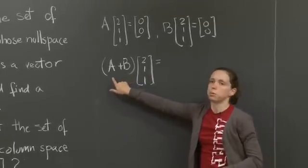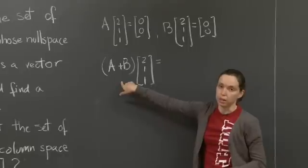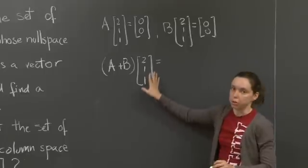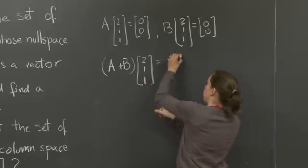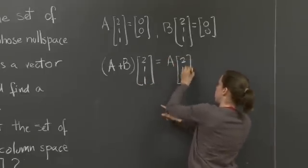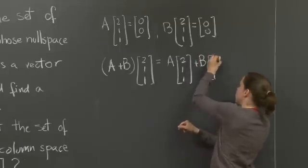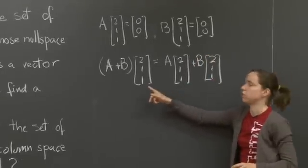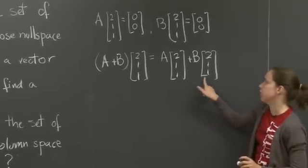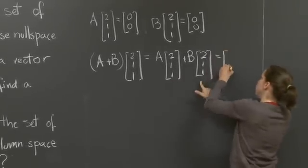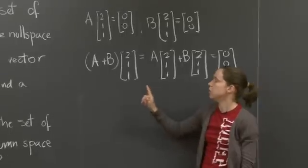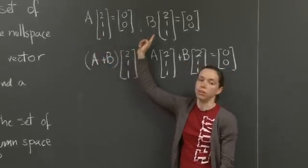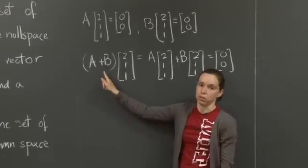Well, if you think about what this means, you're just adding entry by entry. And you can do it slowly on your own, and just check that this is what happens. But by now, you are familiar enough with matrices that this should not be a surprise. This is 0, 0, and this is 0, 0, so their sum is 0, 0. So indeed, 2, 1, 1 is in the null space of A plus B. So if A and B are in the set, A plus B is in the set as well.